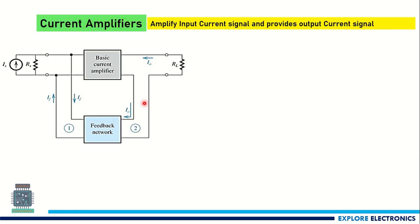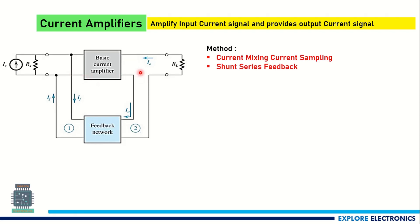Now looking at the current amplifier. This configuration behaves as a current amplifier where the feedback network is connected in parallel at the input side and sampling is done serially — we call it shunt-series feedback. In a current amplifier, we amplify the input current signal Is and the output is also a current quantity. The feedback structure here is shunt-series, which we call current mixing and current sampling.